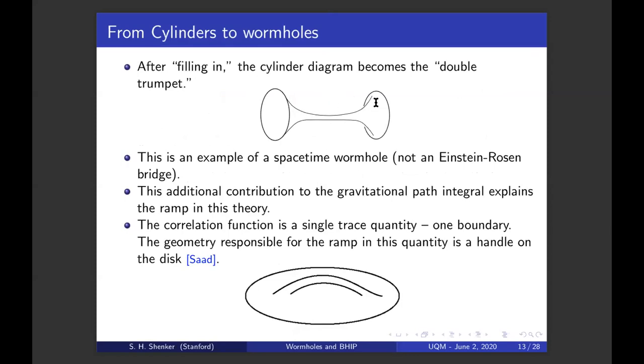So you replace here SYK not with a Gaussian random matrix ensemble, but just with a special non-Gaussian random matrix ensemble. After filling in that cylinder I wrote becomes a diagram we call the double trumpet. This is a real geometry here. This is an example of a space-time wormhole. The circle, of course, is Euclidean time, as is this one. So this is a space-time geometry. If you take a slice at constant time, this would be a line, and that's the analog of an Einstein-Rosen bridge, which is a spatial wormhole. So there are two kinds of wormholes running around in this story. A space-time wormhole that we're talking about today, and a spatial wormhole, the Einstein-Rosen bridge.